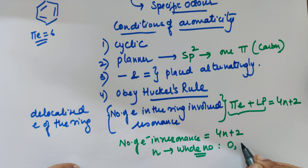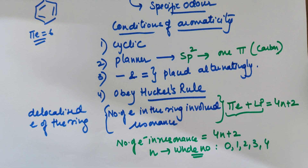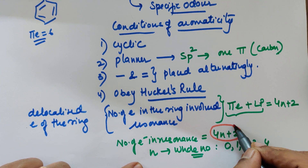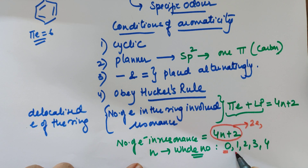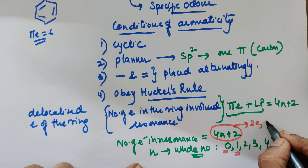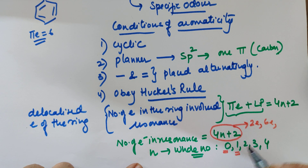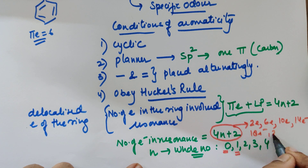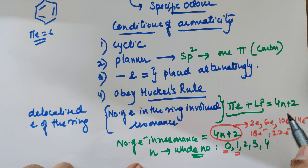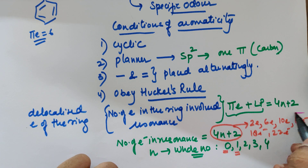In the formula 4n + 2, n must be a whole number. Whole numbers begin from 0, 1, 2, 3, and so on. So the allowed values are: if n = 0, then 2 electrons; if n = 1, then 6 electrons; if n = 2, then 10 electrons; if n = 3, then 14 electrons; then 18, 22, and so on. If the pi electrons and lone pairs in resonance inside the ring match one of these numbers, the compound is aromatic.